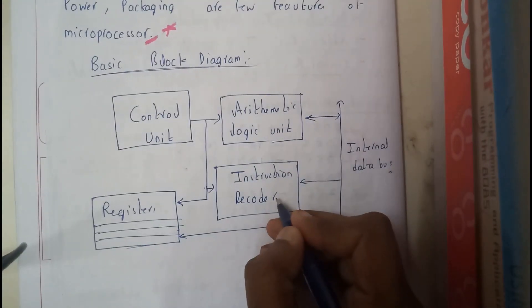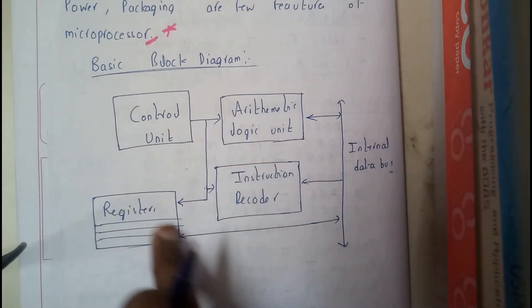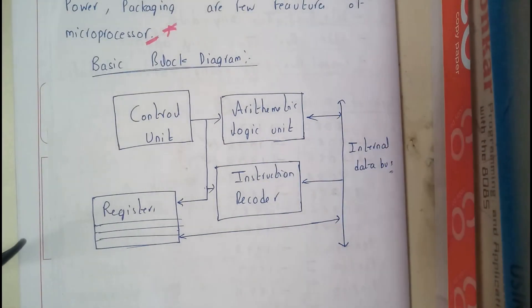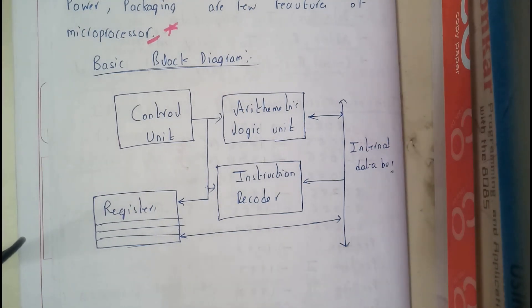It has arithmetic logic units, instruction decoder, control unit and registers, all are connected using the internal data bus. Now I hope everyone got a small idea on different microprocessors and we also discussed the features of microprocessor.